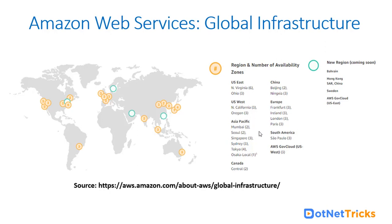In the Asia Pacific region: Mumbai has two availability zones, Seoul two, Singapore three, Sydney three, Tokyo four, and Osaka Local one. In Canada Central there are two. In China, Beijing and Ningxia have two and three availability zones respectively.